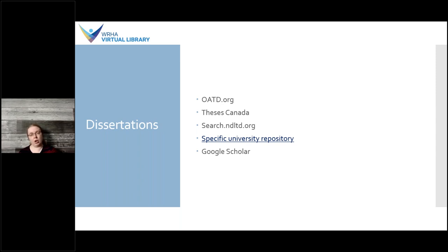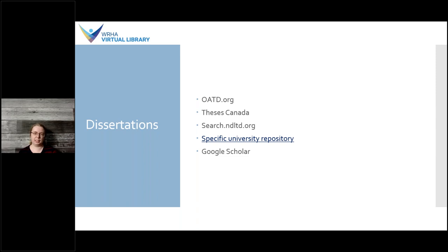If you're looking for dissertations, there are a number of different places to search. OATD.org, Theses Canada, and search.ndltd.org are all examples of search databases specific to dissertations and theses. You can also look at a specific university repository — for example, the University of Manitoba has the MSpace repository where graduate students deposit their theses. There's also a link to a list of all the different Canadian university repositories available in the slides. Google Scholar is another option since many repositories are indexed there, though it doesn't have a specific filter for theses and dissertations.